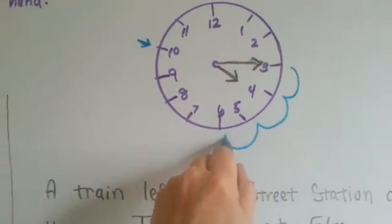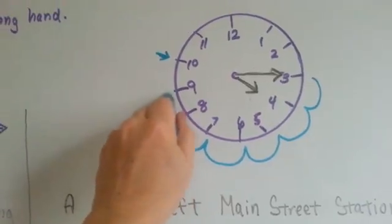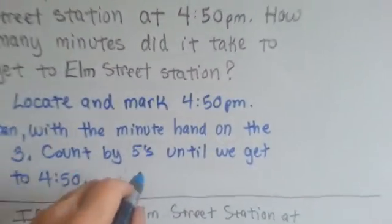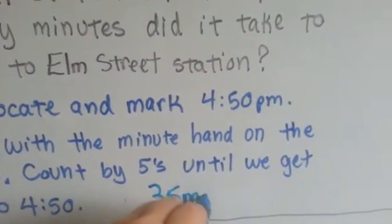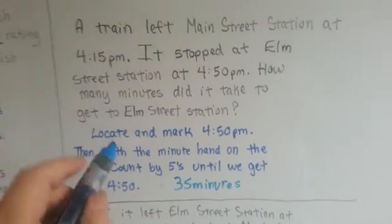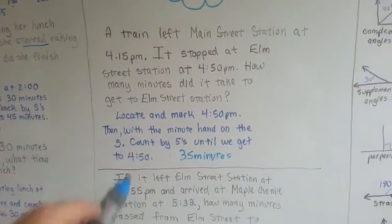5, 10, 15, 20, 25, 30, 35. So we know it was 35 minutes between Main Street Station and Elm Street Station.